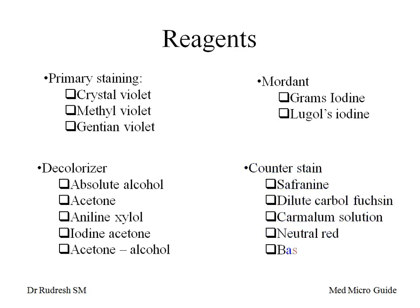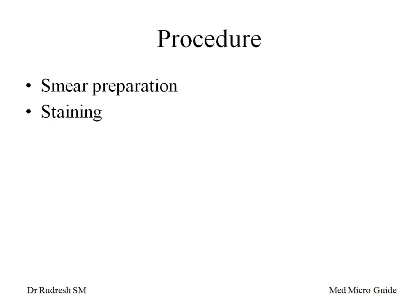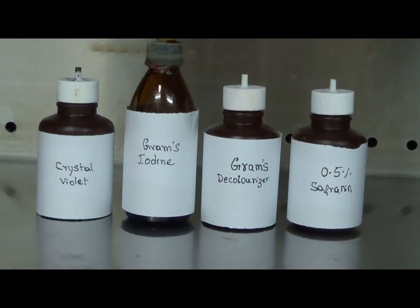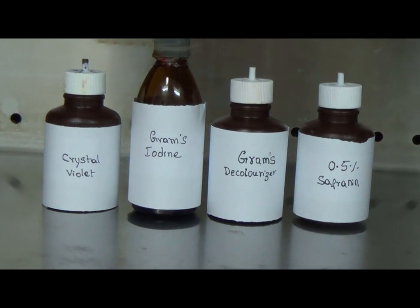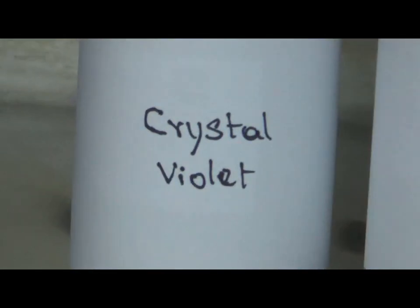The counter stains used are safranin, dilute carbol fuchsin, carbolum solution, neutral red, and basic fuchsin. Let's see the procedure of Gram staining. I have already explained the smear preparation for Gram staining as a separate video. In this video, I am going to explain the procedure of Gram staining. Gram staining has four steps and four reagents.